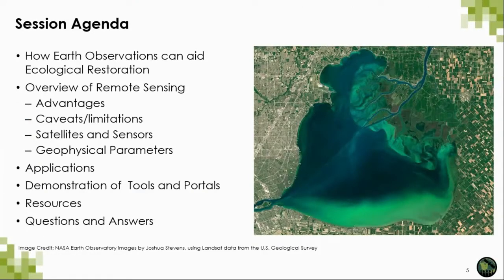Here is the agenda for today. First, I'll cover how Earth observations can aid ecological restoration work, then an overview of remote sensing — just the highlights to give a conceptual understanding and some common terminology. Then I'll talk about remote sensing data sets and tools that can be used in restoration, followed by a demonstration and tours of common data visualization and data access portals, and then a question and answer session.